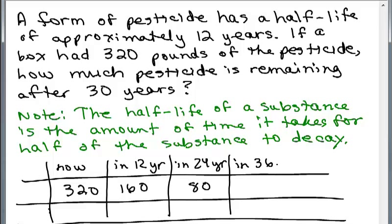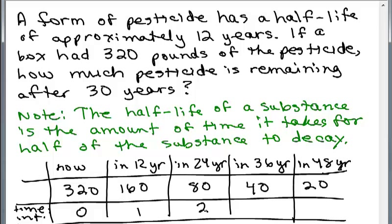And then in 36 years, you would have 40 pounds. Another 12 and 48 years, you can go on forever, you would have 20 pounds of pesticide. Now on the time period, we talk about intervals of time. And the trick here is one time interval is 12 years. So the actual time interval, this is like no years have passed, that's right now. And then here's one time interval has passed, two time intervals have passed, and three time intervals have passed. In 48 years, that's four time intervals. So 12 years for a time interval. This is the amount of pesticide. And this is the actual years.